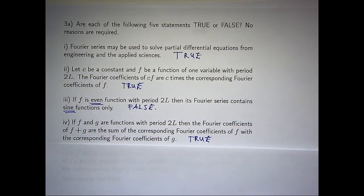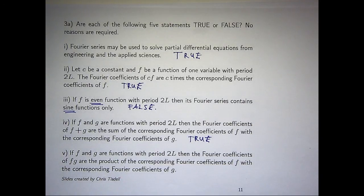Okay, the last true-false question. Suppose again, I've got two functions, f and g, both with the same period. Then the Fourier coefficients of the new function f times g is just made up of the corresponding Fourier coefficients of f multiplied by the Fourier coefficients of g. Is it true or is it false?